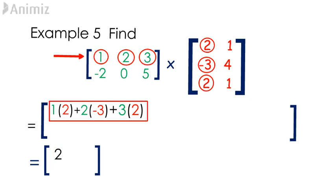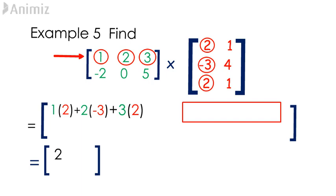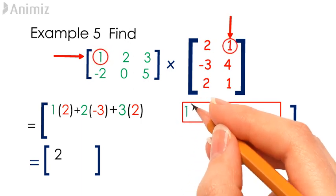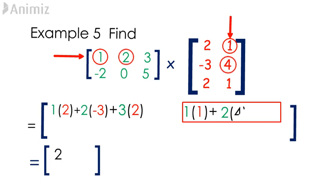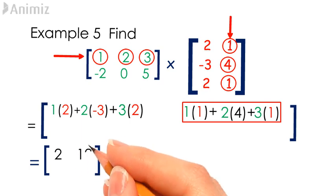Let's move on to look for the (1,2) element of the resulting matrix. To do that, add the multiplication outcome of elements from the first row of the first matrix to the elements from the second column of the second matrix. 1 times 1 plus 2 times 4 plus 3 times 1 gives us the (1,2) element of the resulting matrix, which is 12.